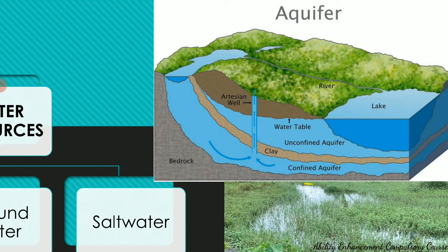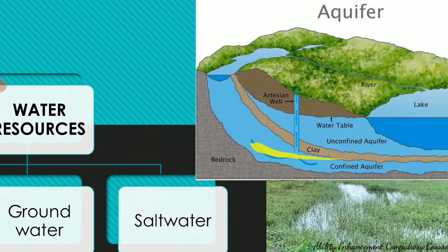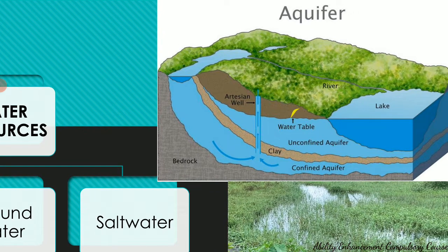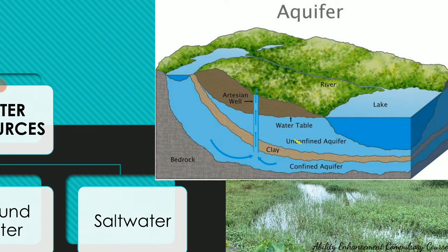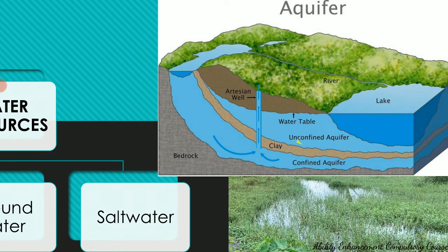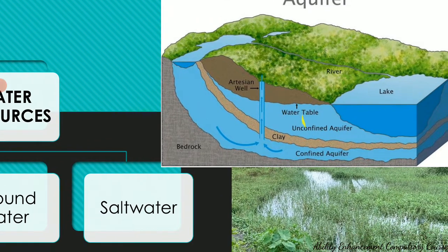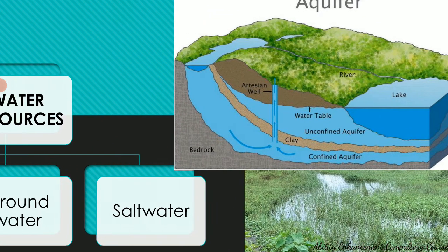A confined aquifer is the one present below an impenetrable or impermeable layer of clay — farther to reach. An unconfined aquifer is what is present directly below the soil, directly below the water table. The water table is the boundary between the soil surface and the area where groundwater is available, where groundwater saturates spaces between rocks and sediments. Below the unconfined aquifer we find an impermeable layer, and below that is the confined aquifer.